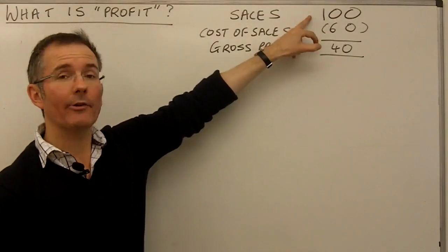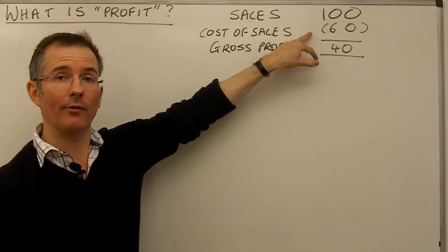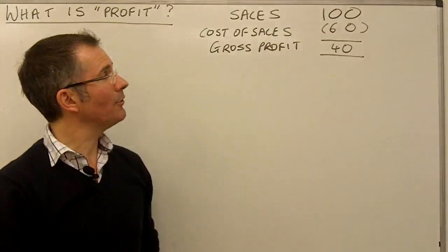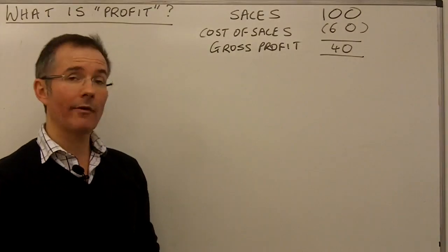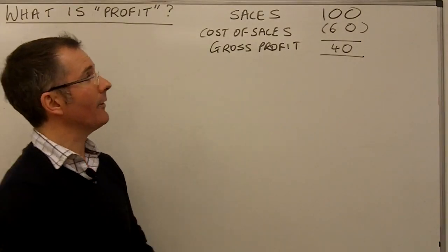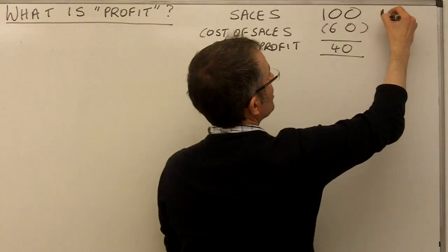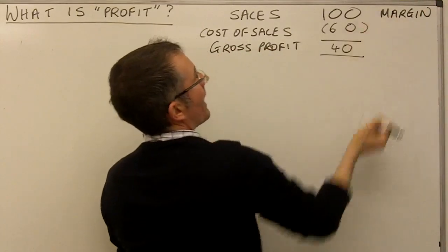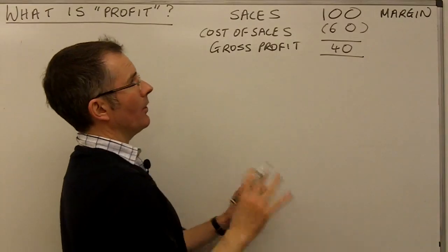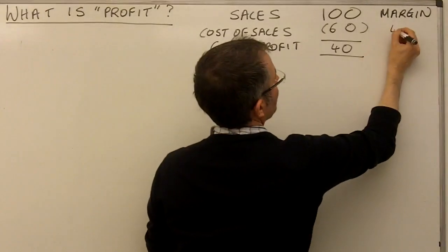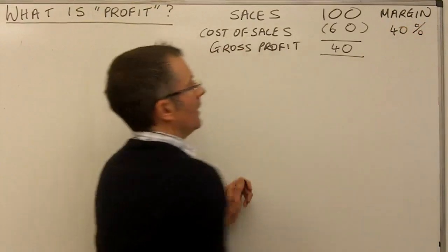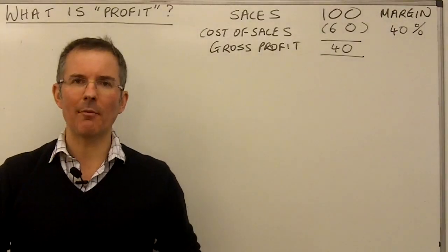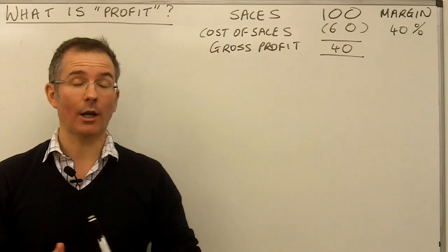For Tesco, gross profit is what you sell your sandwiches for minus the cost of the sandwiches themselves from a supplier. So gross profit is 40. Sometimes you'll hear people talk about the gross margin, given as a percentage — that's simply 40 over 100, so you could say the gross margin is 40%, which sounds pretty healthy. Every time you make a sale you're getting a 40% profit margin on it. Except there's something missing — quite a lot missing.